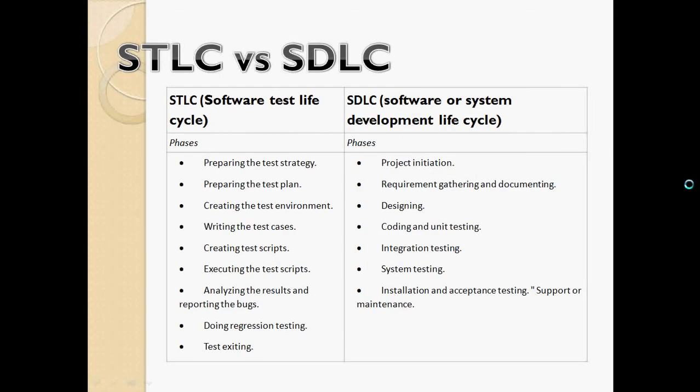Most people working in the software industry have a basic understanding of the software development lifecycle. The stages in general are project initiation, requirements gathering, designing, coding, testing, and releasing. You might have heard of different models to implement it — like the waterfall model, the spiral model, or most currently, the agile scrum model. However, we're going to be dealing more with a component of the software development lifecycle, which is the testing phase.